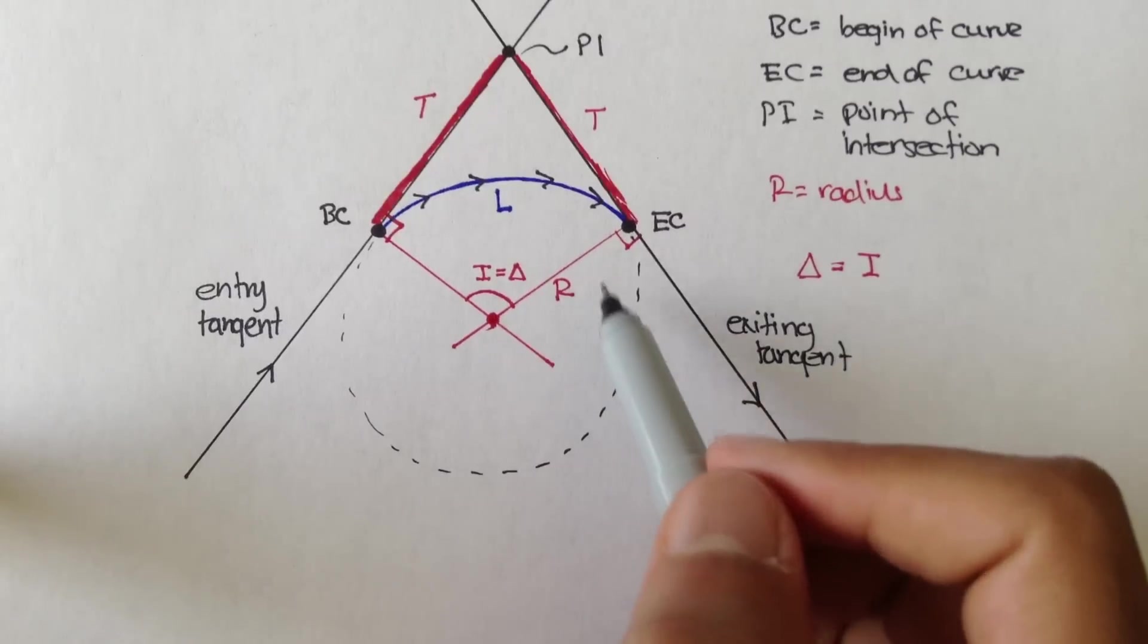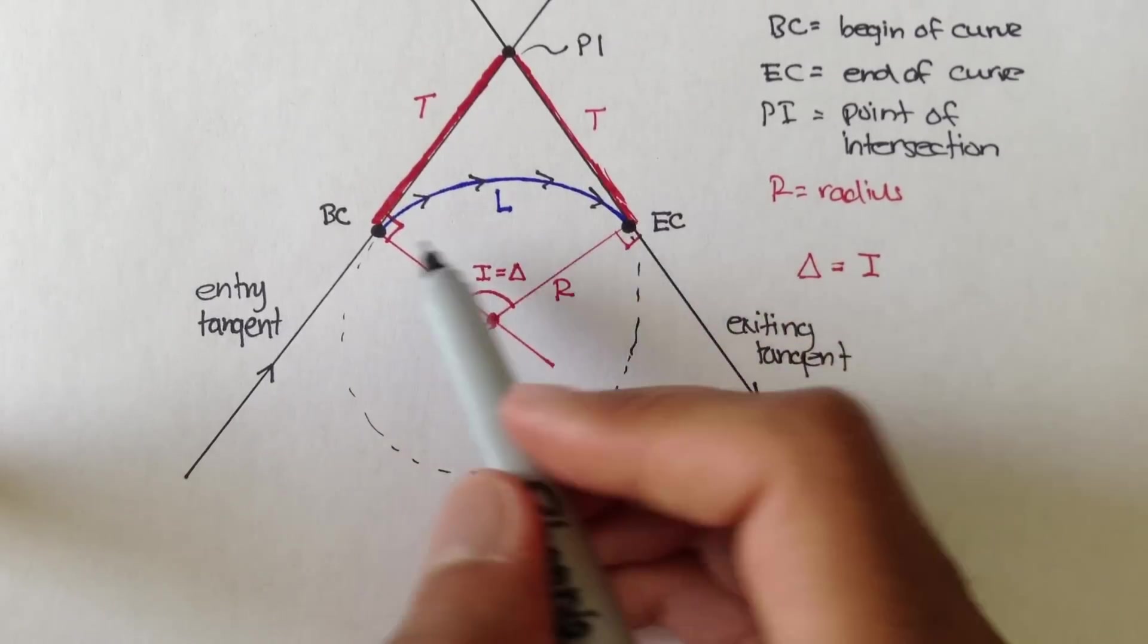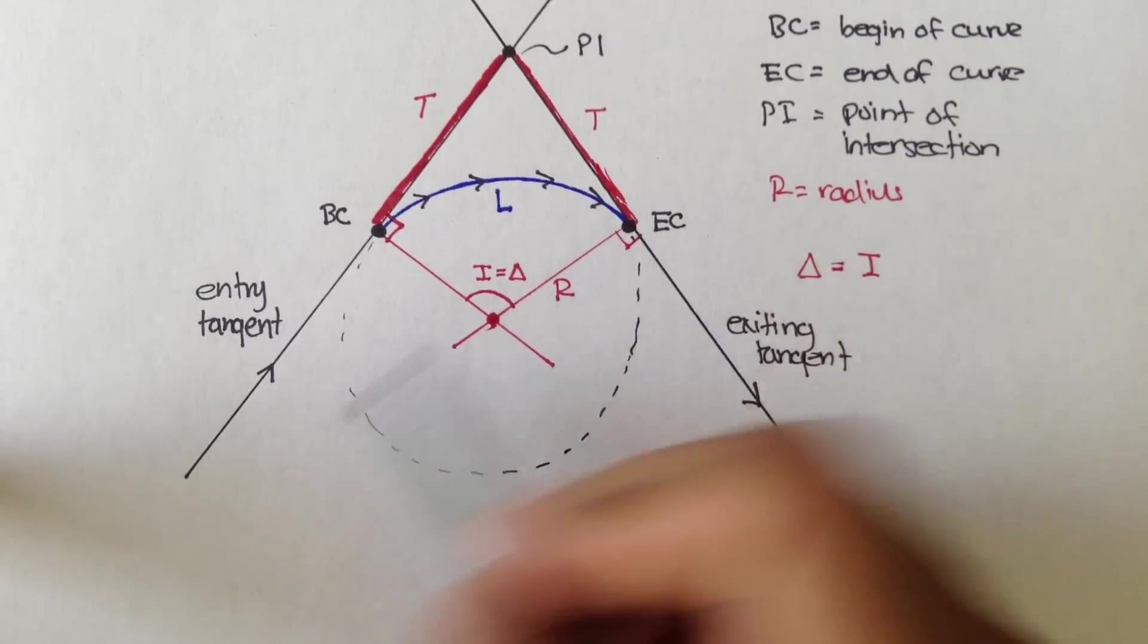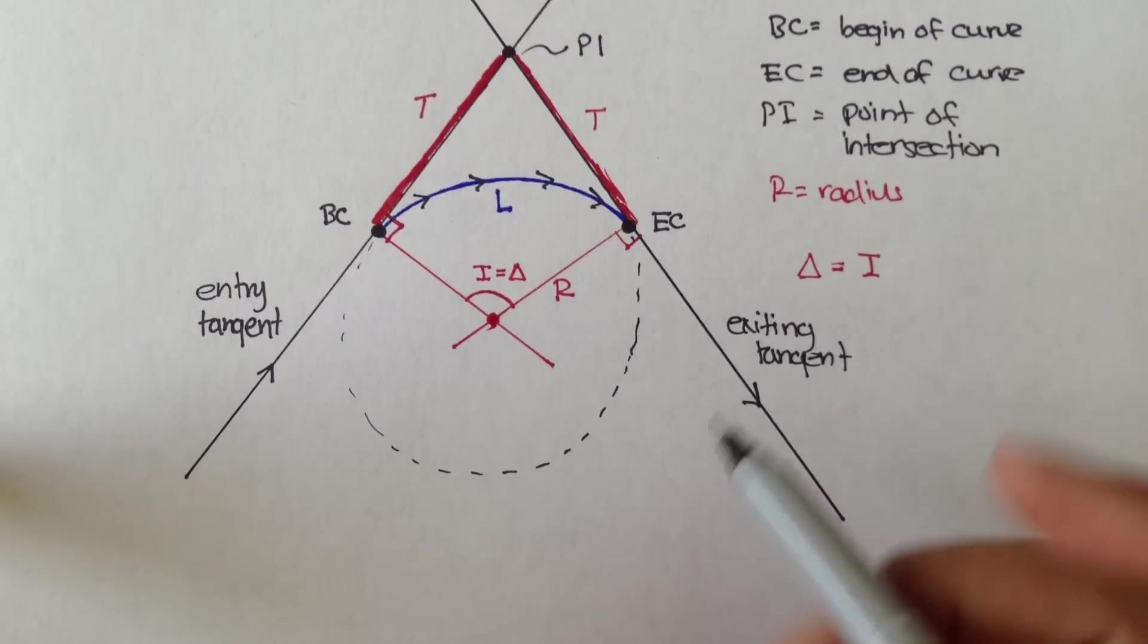Horizontal curves are just parts of a circle. And we can draw tangents from where the curve starts and where the curve ends to find a whole bunch of other stuff.